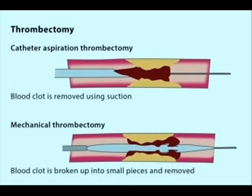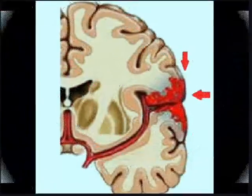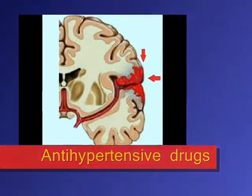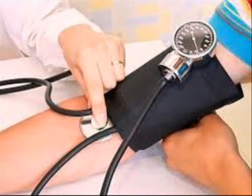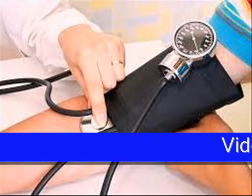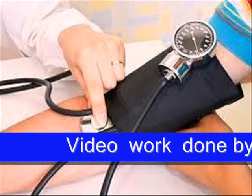Endovascular procedures like mechanical thrombectomy can also be performed, in which a catheter is inserted through the artery in the groin, guided up to the blocked artery in the brain, and the stent retriever is used to remove the blood clot. Various other surgical procedures can be done, and antihypertensive drugs can be used to decrease blood pressure.